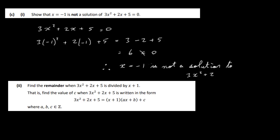Another approach: if x equals minus 1 is a root, then x plus 1 is a factor, and you could divide it in and should end up with a remainder. I'll actually do that in the next section. Find the remainder when 3x squared plus 2x plus 5 is divided by x plus 1 — so we've got to do the long division.